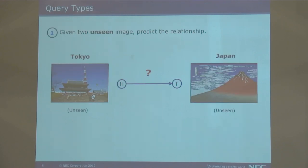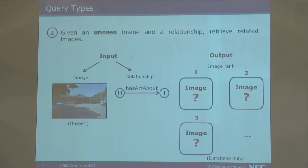With this type of knowledge graph, there are some queries that are particularly interesting. For example, given two images, we can ask our system to predict how they are related — for example, 'located in.' Or given an input image and a fixed relationship, we can ask our system to retrieve images that satisfy the triple.